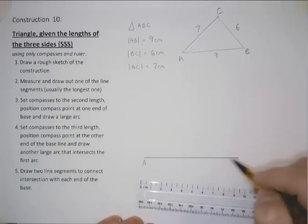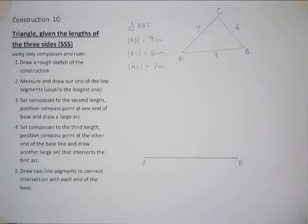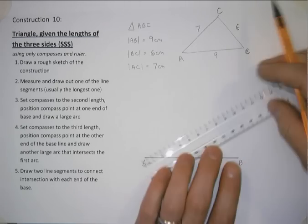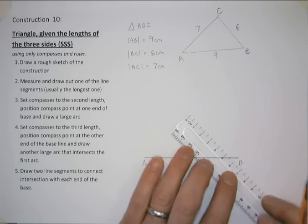So, label it AB. Now the second two sides, we're not just going to blindly try and do 7 centimeters and 6 centimeters and hope they meet.